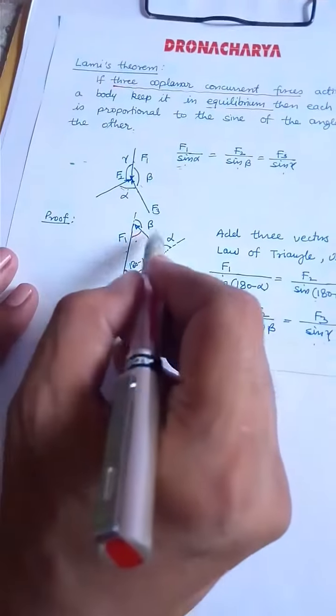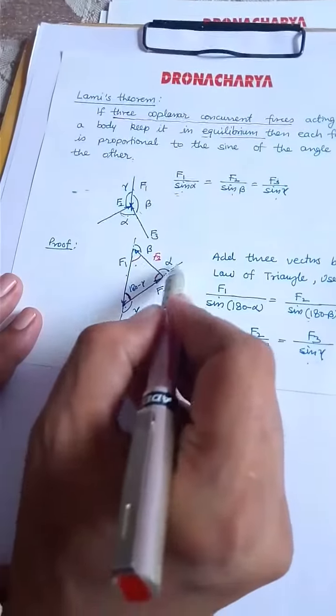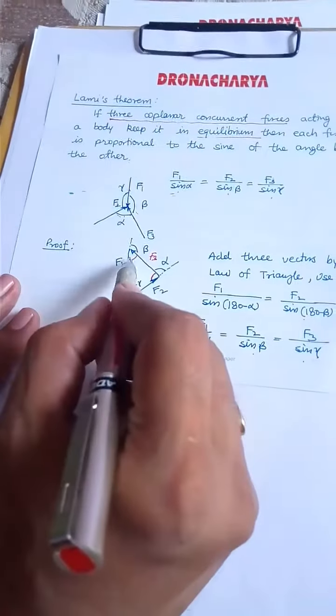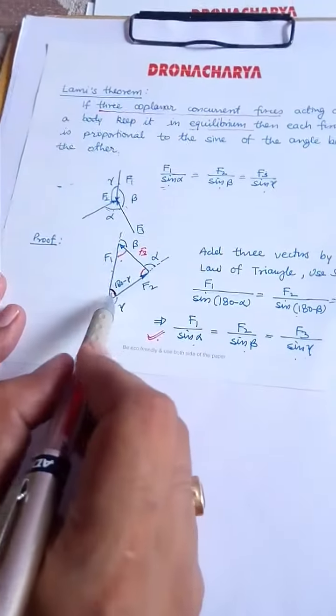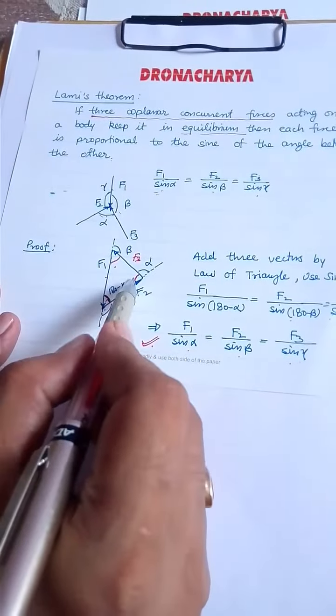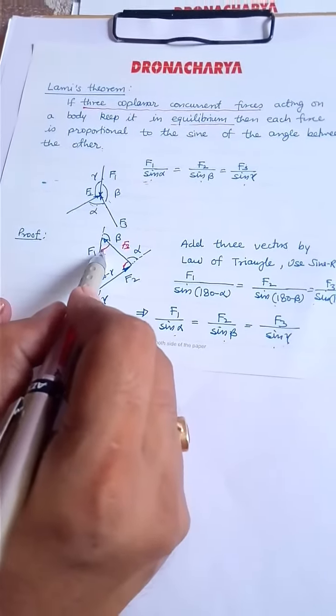F2 to F3, we have angle is alpha. So this is alpha. So if you will see the interior angle, that will become 180 minus gamma, 180 minus alpha, and 180 minus beta.